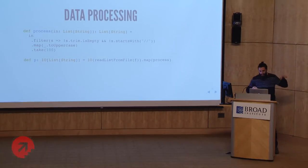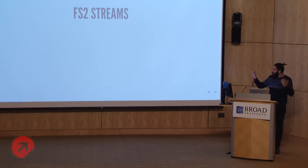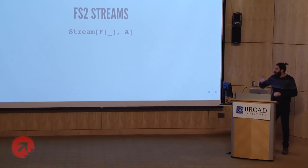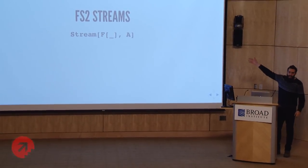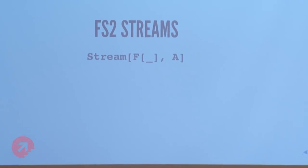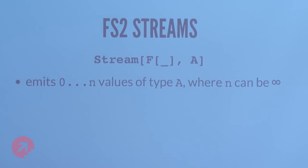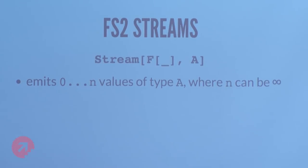Let's look at a stream. FS2 exposes this type Stream with two type parameters, F and A. The A is basically the value that the stream is going to emit. Stream is a data type that represents a computation that is going to emit 0, 1, or n values, where n can be infinite. Having infinite streams is actually a perfectly fine thing to do and very useful.